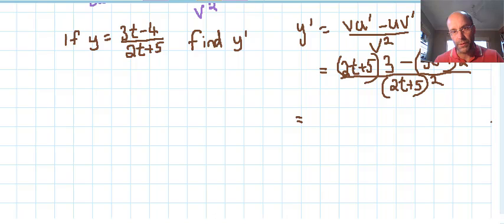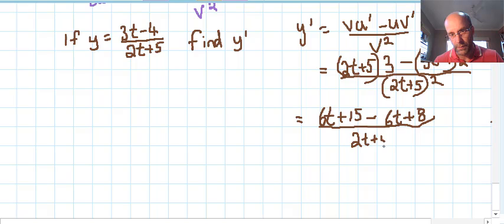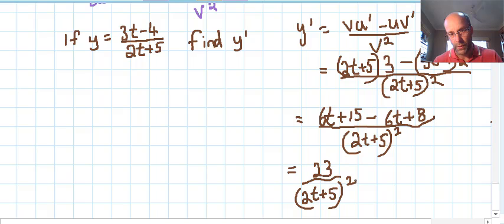We have a little bit of work to do on this one. So on the numerator, we can simplify this first term by going 6t plus 15, then minus 6t. Now be careful, that'll be minus 8 there. Minus 8 or minus negative 8 is plus 8. Over 2t plus 5 all squared. Now we've got 6t takes 6t which is 0, and we have 15 plus 8 which is 23. So 23 over 2t plus 5 all squared.